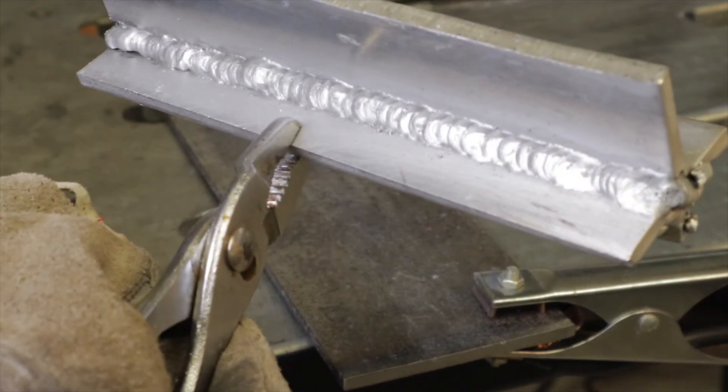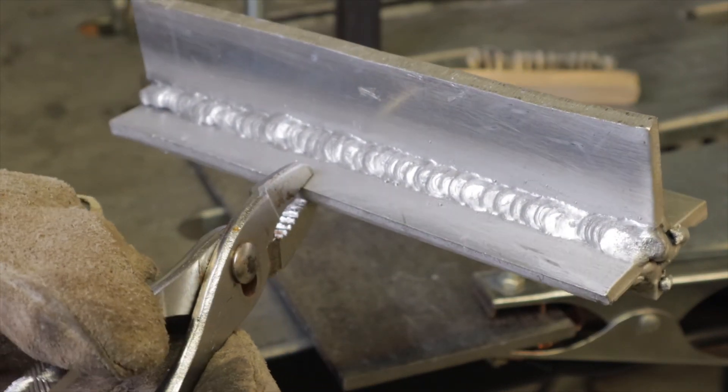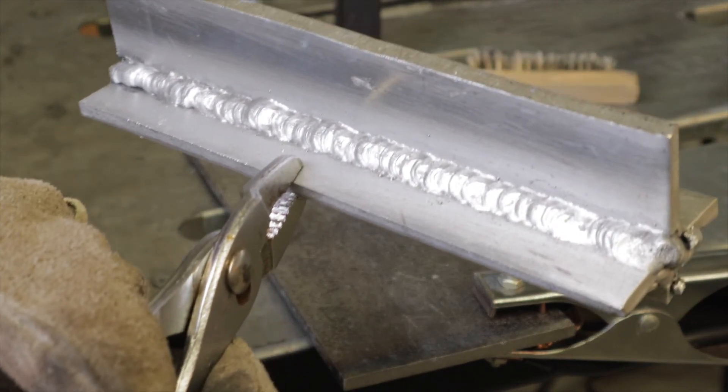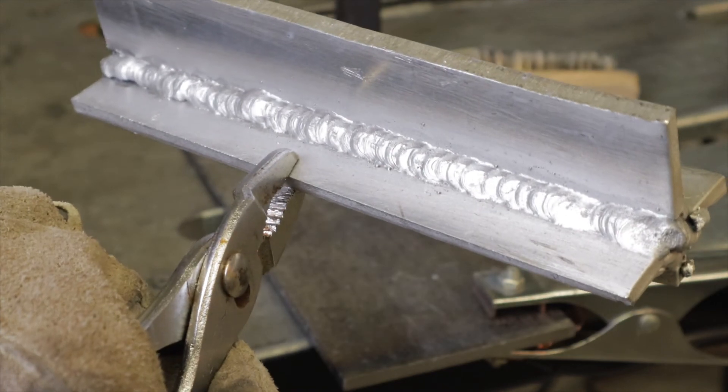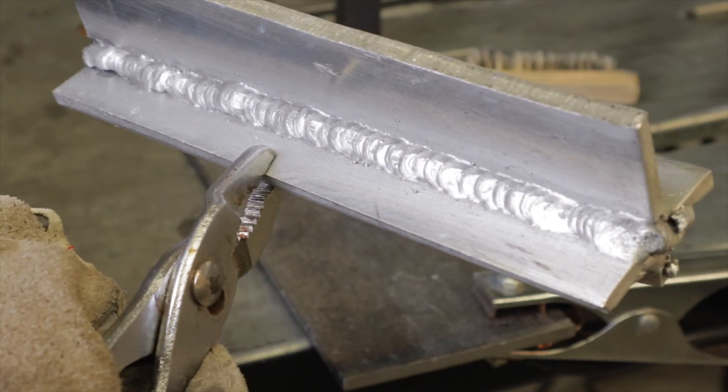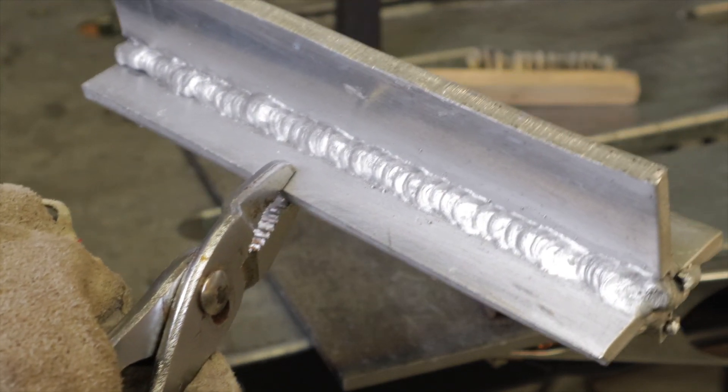The YesWelder MIG 250 Pro, once you get the modifications done like I showed in that previous video, welds really nice. I'm no expert when it comes to spool gun welding aluminum, but it's a real nice machine in my opinion.